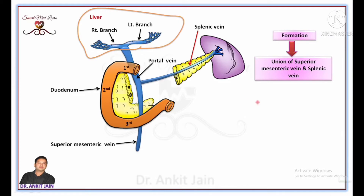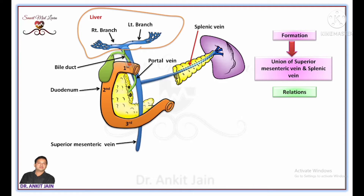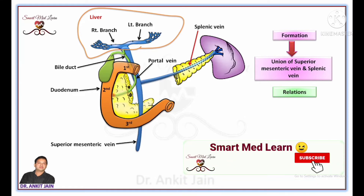Let's discuss the relations of portal vein. Bile duct is formed by the union of cystic duct and common hepatic duct. This bile duct runs downward in front of the portal vein but behind the first part of the duodenum, and finally opens into the second part of the duodenum.